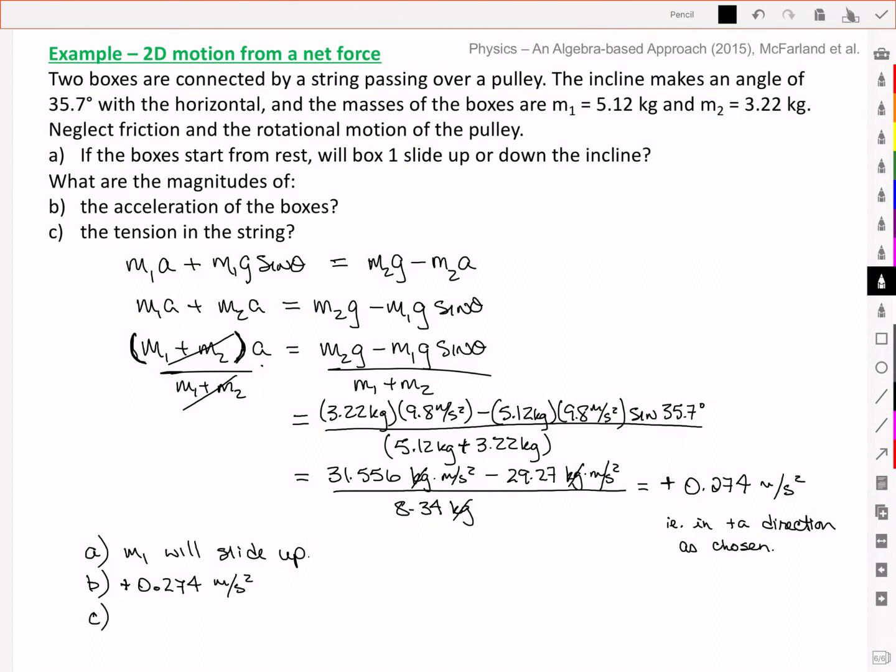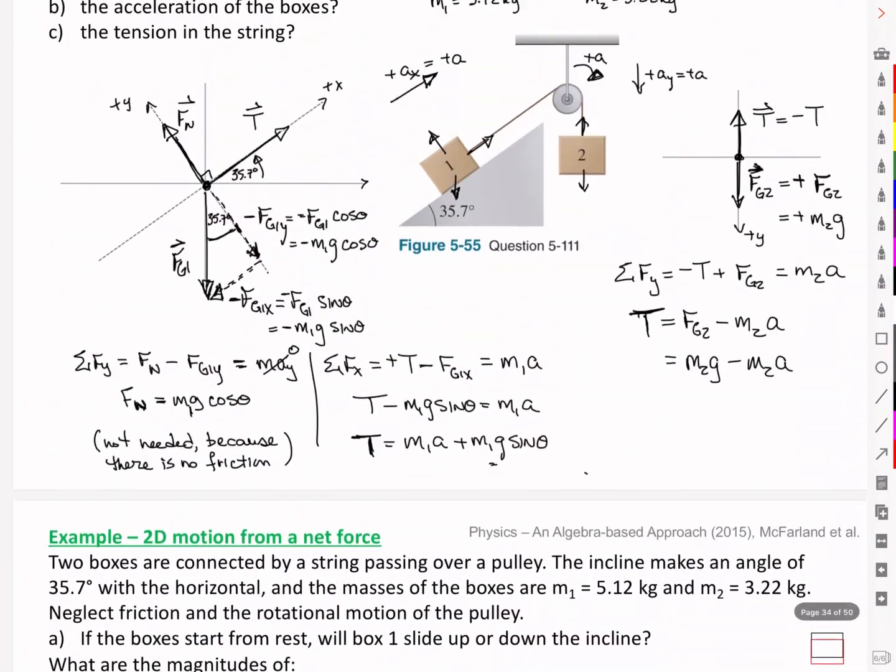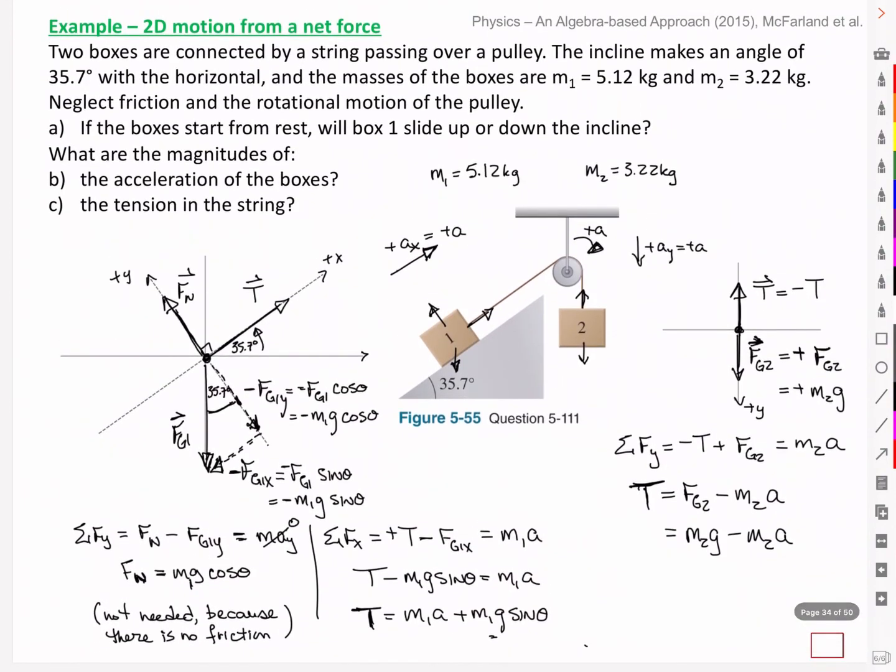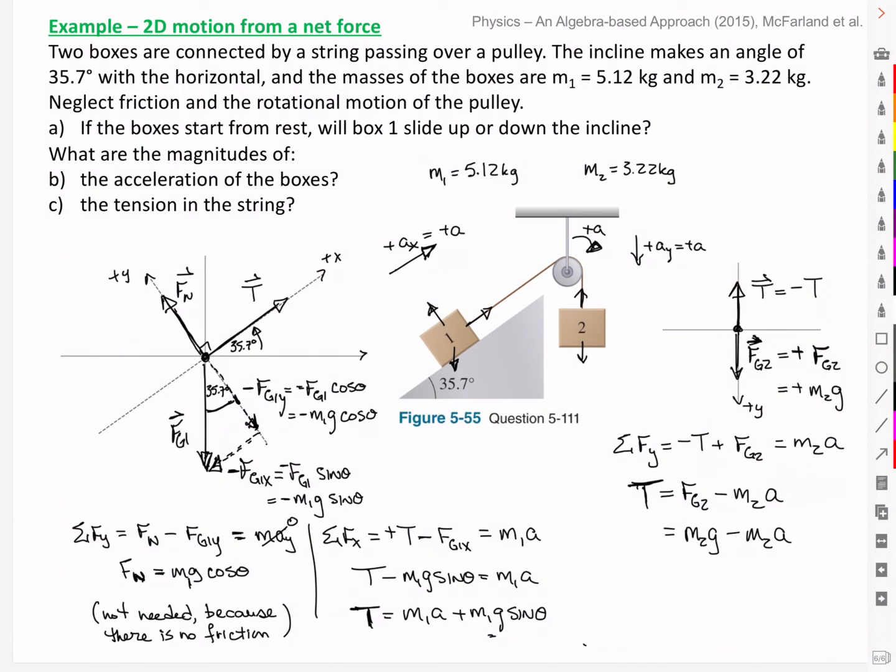And part C asks us for the tension. So we can go back and use one of those tension equations. In other words, a positive 30.7 Newtons. Now this is for the magnitude. And if we look back, that means that we'll have a tension upwards on the right of that 30.7 Newtons.